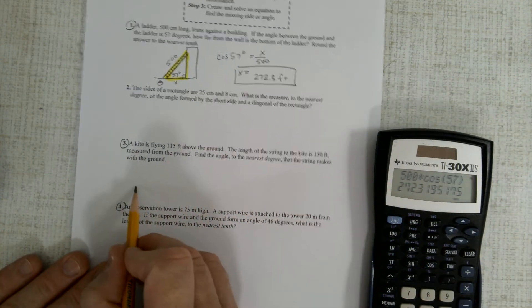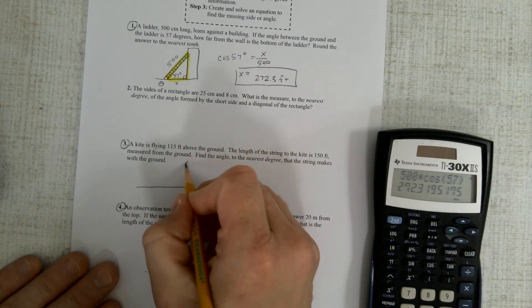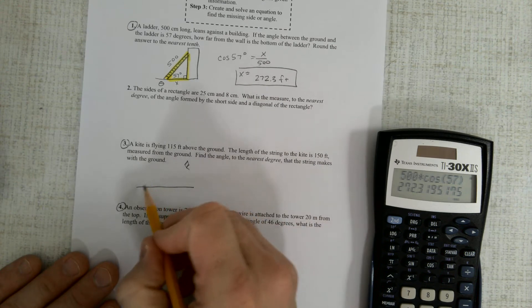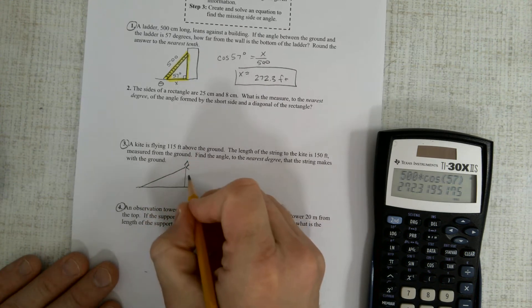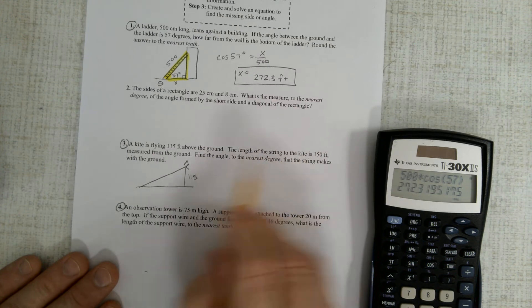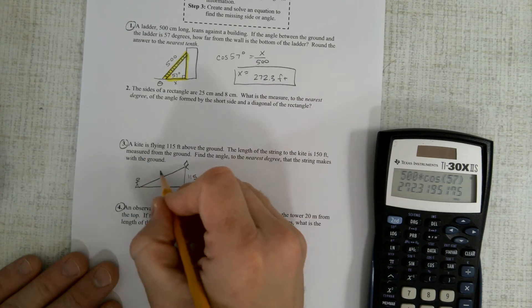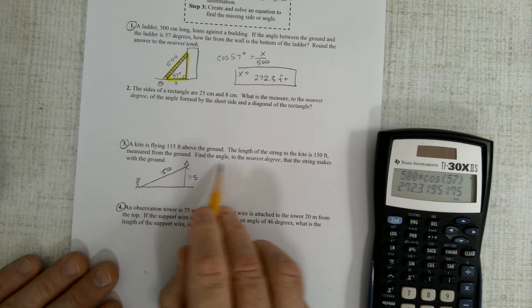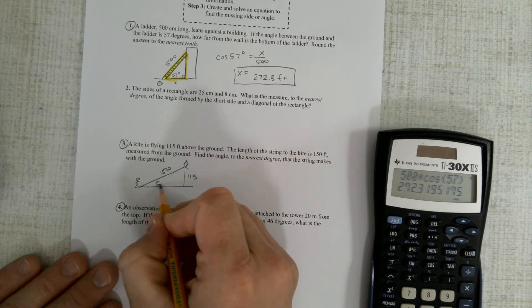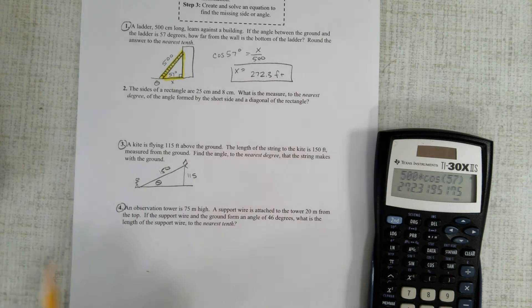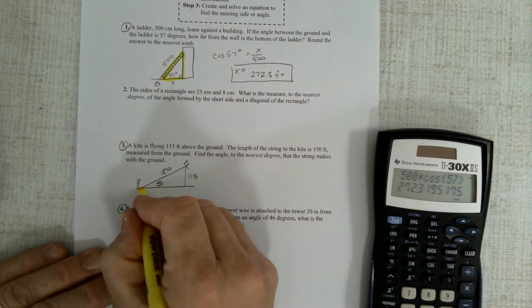Number three, a kite is flying. You'll have a lot of kite problems. Here's the kite up in the air. Here, it's flying 115 feet up. The length of the string, well, right there's the string. If that's the kite, that's the string, so that's 150. Find the angle that the string makes with the ground. Well, that's that angle. And again, here's your right triangle.